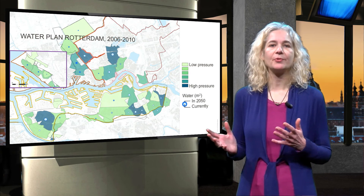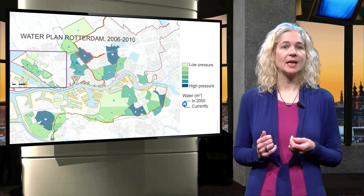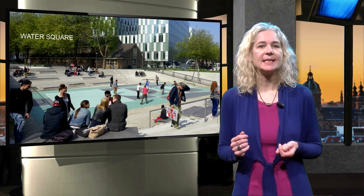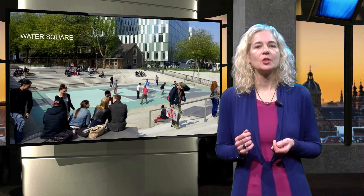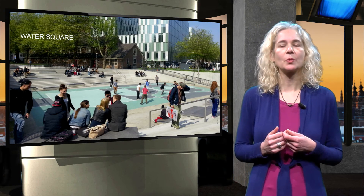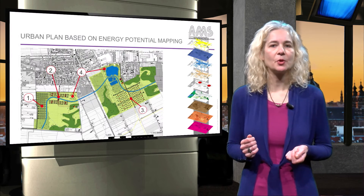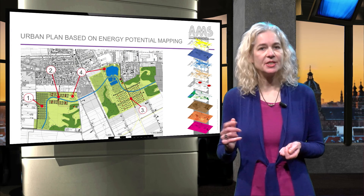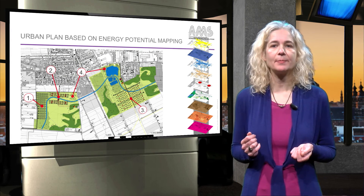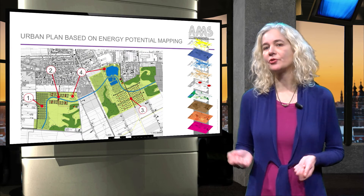Then you will dive deeper into various data and mapping methods that address urban challenges. Combining data on water with social, economic and spatial data resulted in the water square in Rotterdam, the Netherlands. Another example you will learn about is energy potential mapping, which can help urban developers to plan an energy efficient or even carbon neutral neighborhood.